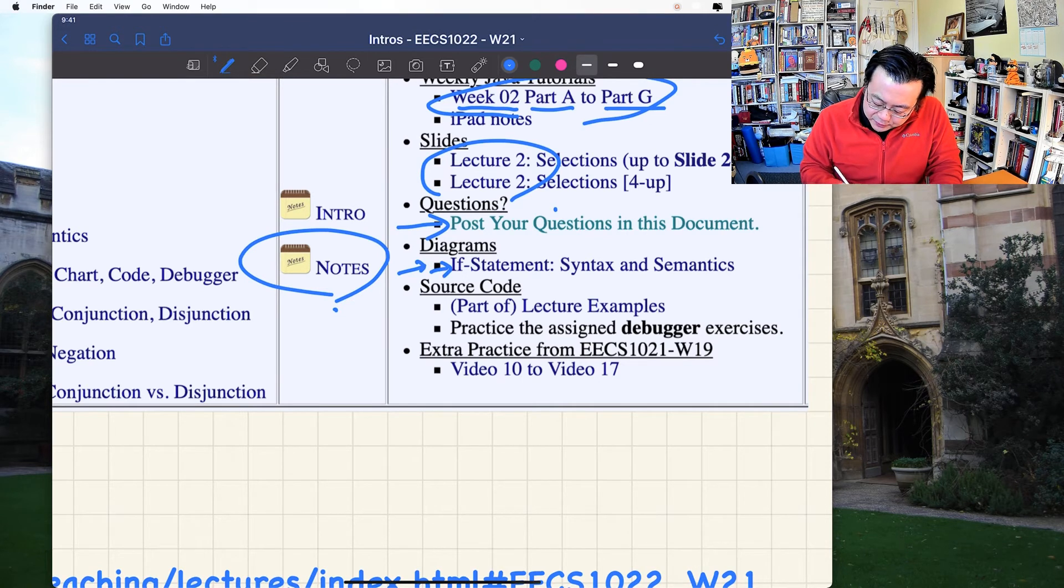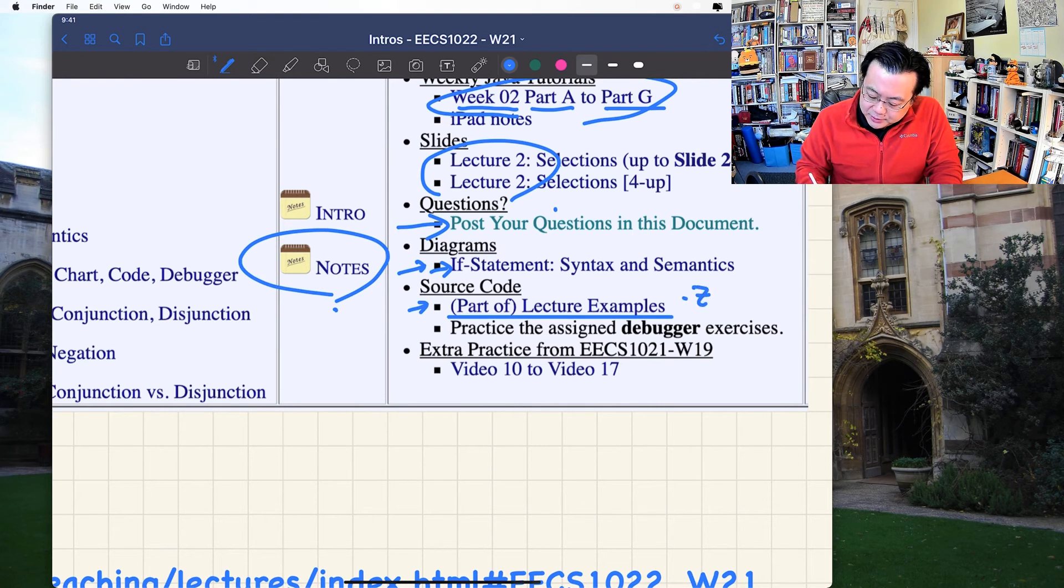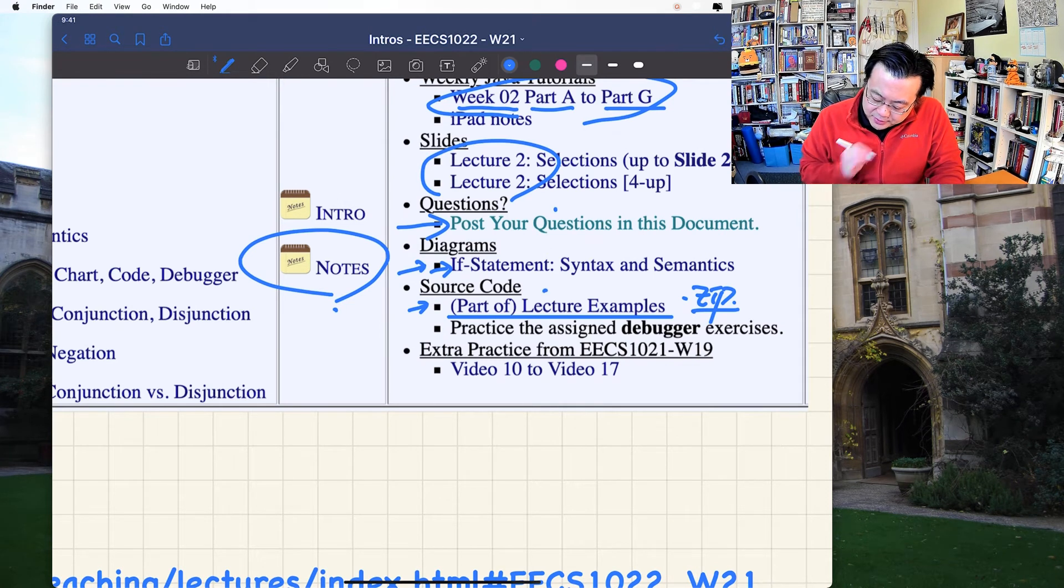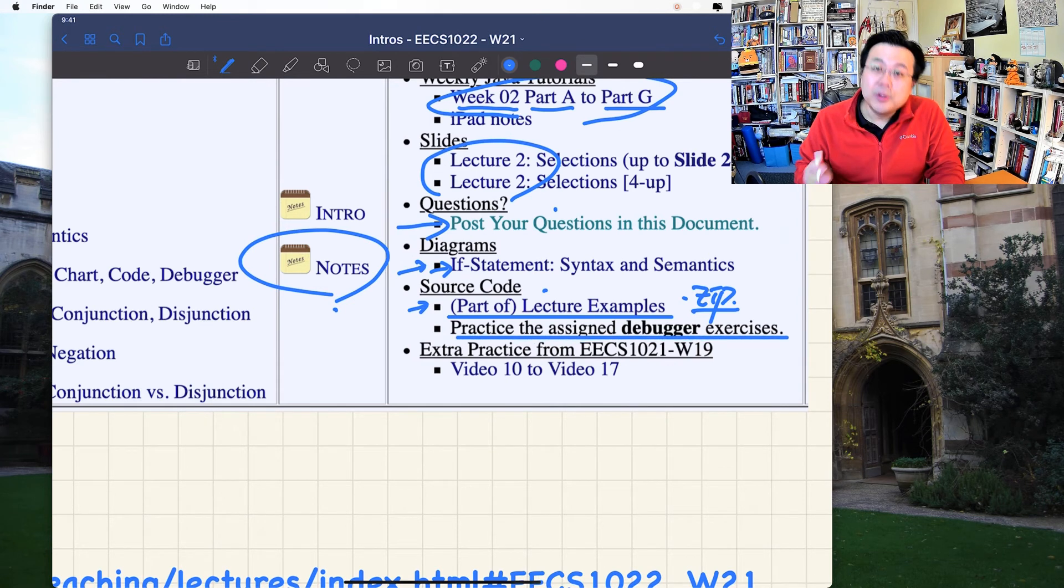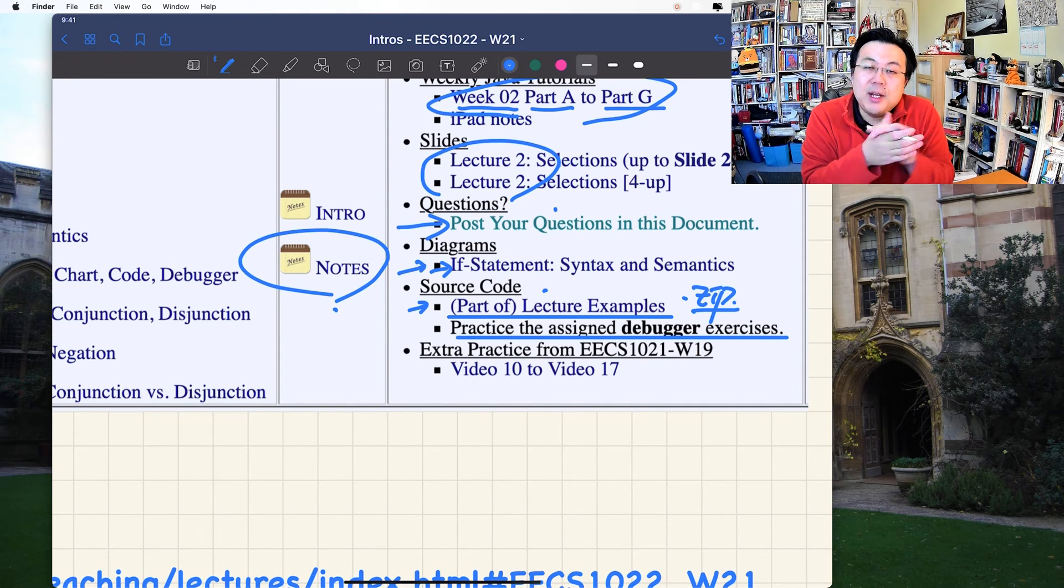For the source code, I gave you, like last time, a Java project archive file.zip. You can look at how to import it from week number one lecture, and you can download it from over here. I also assigned several practice problems for you to complete, to really use the Java debugger.